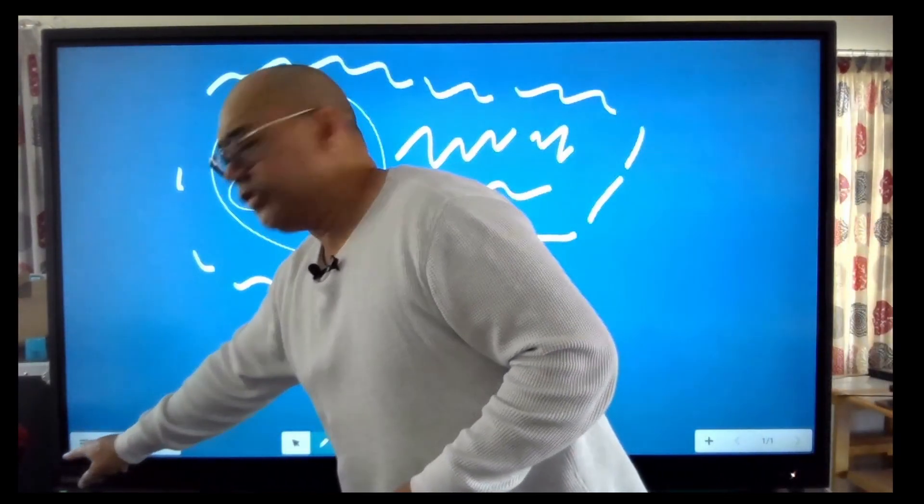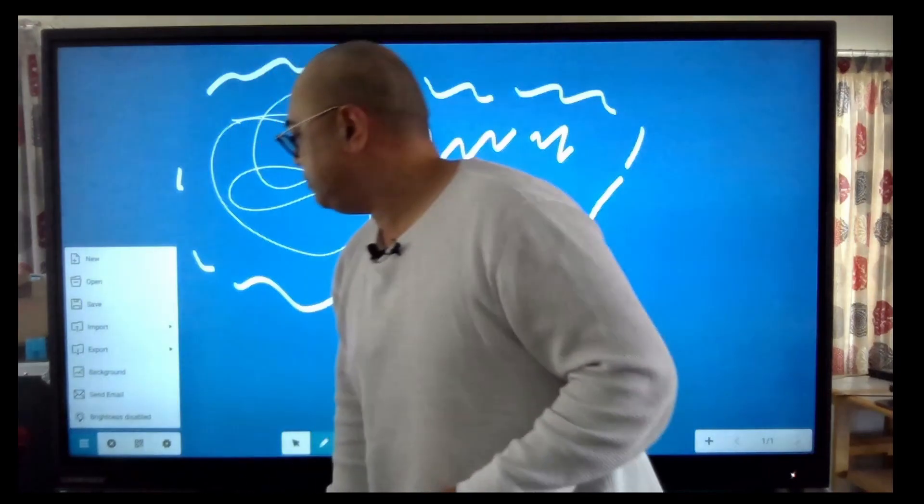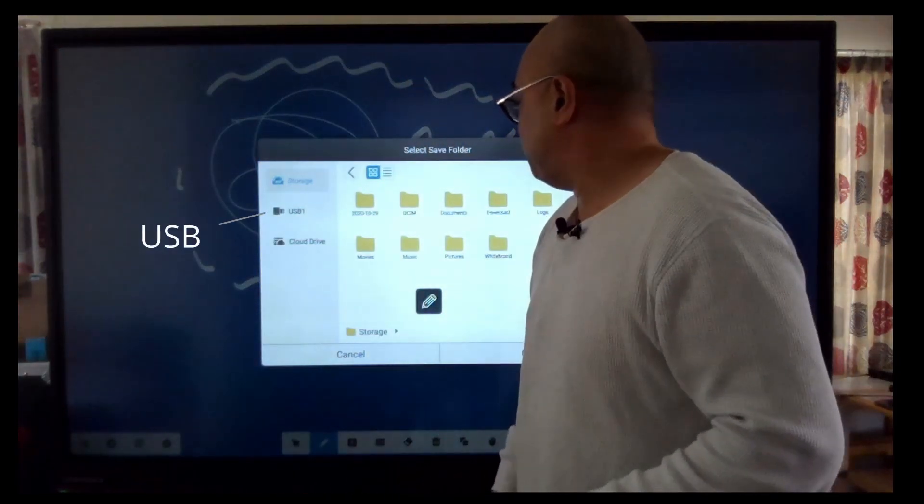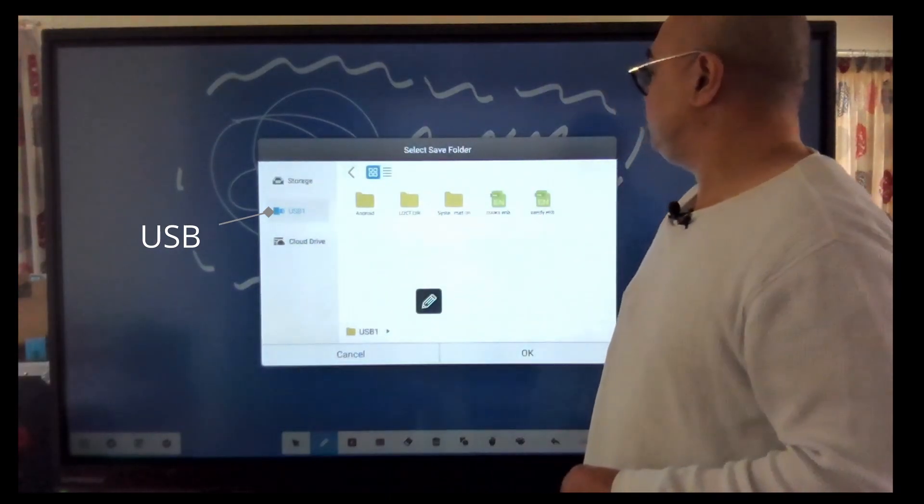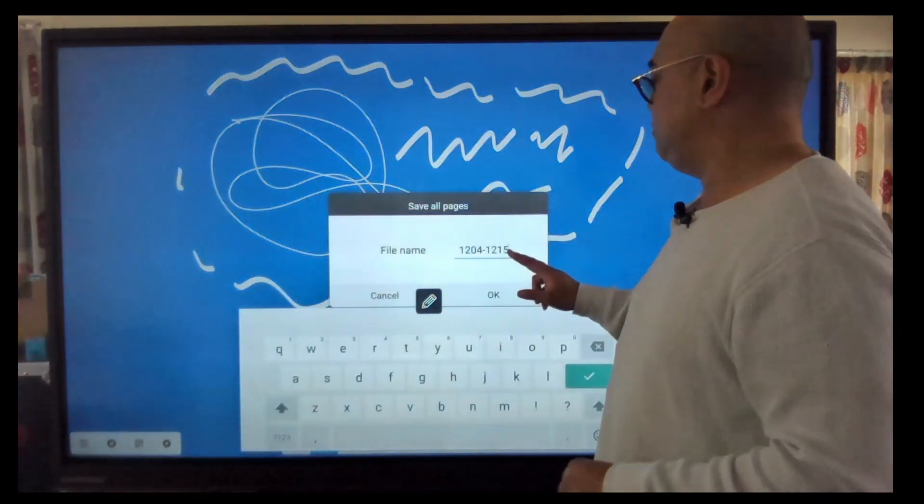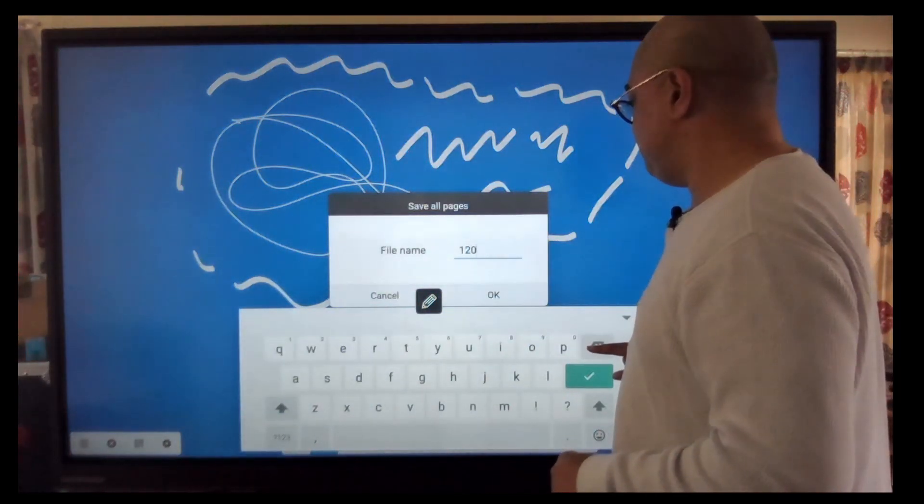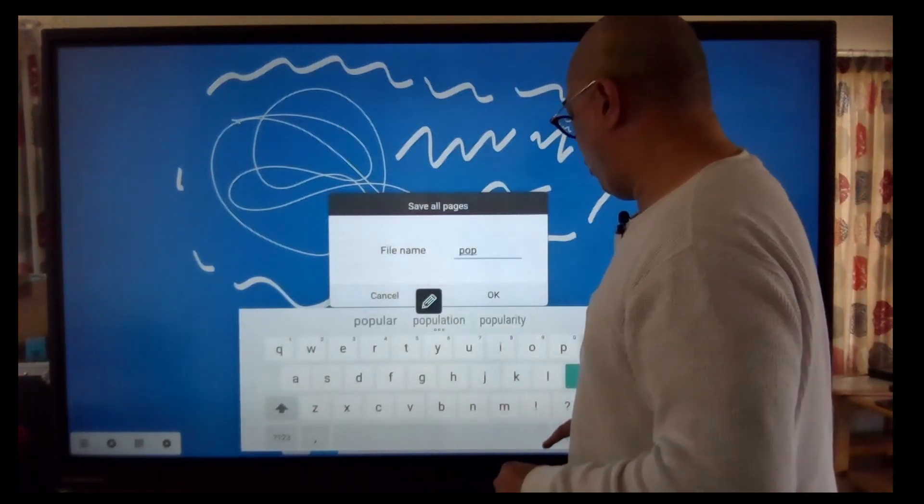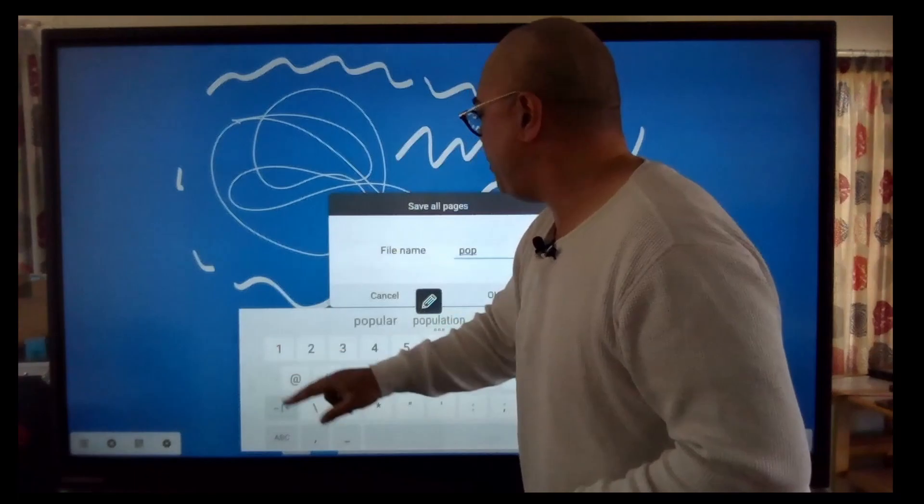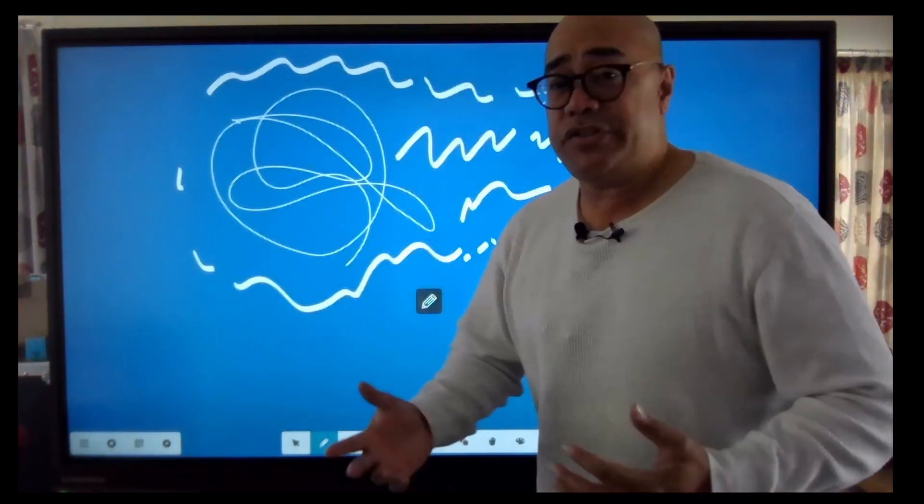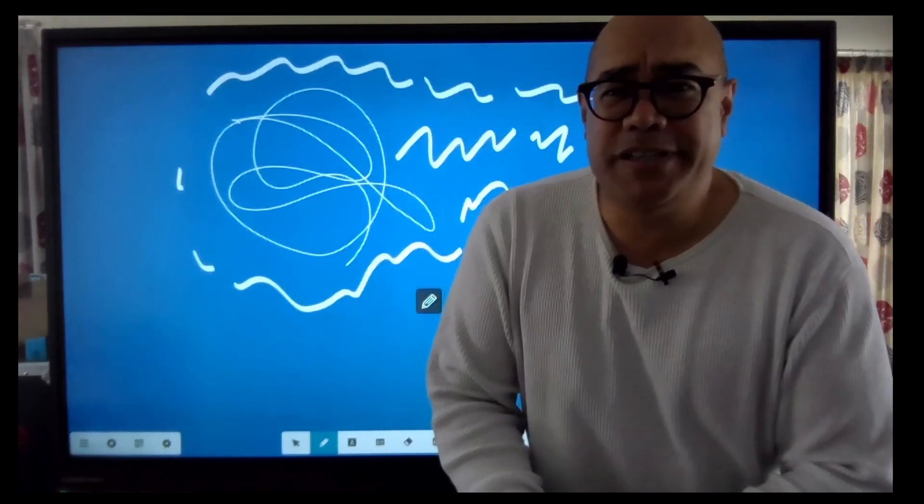And then once I finished, I can save it to the USB stick. Go to the side here, those three bars. I can save now. I can go to the USB stick, okay, and give it a name. Pop, pop, pop one, pop one. Now it's saved. I can take the USB stick out and then carry on somewhere else and then keep going.